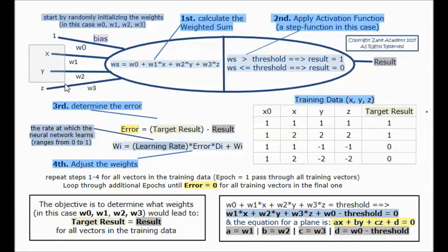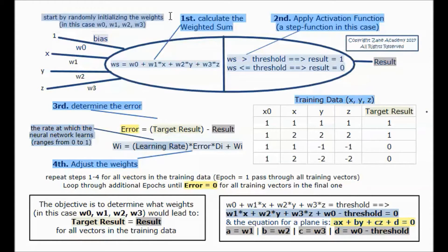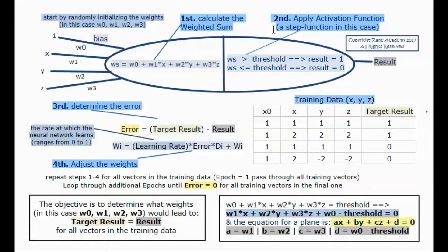We have three inputs x, y, and z, and a bias input that is always 1. We want to find the equation of a plane that separates the 0s and the 1s. We start by randomly initializing the weights w0, w1, w2, and w3, and then we go into a loop where we first calculate the weighted sum: ws equals w0 plus w1 times x plus w2 times y plus w3 times z.